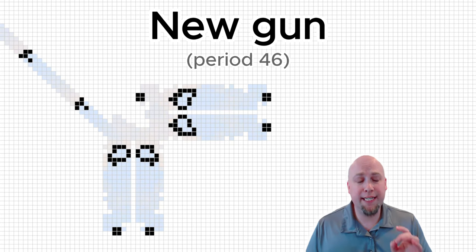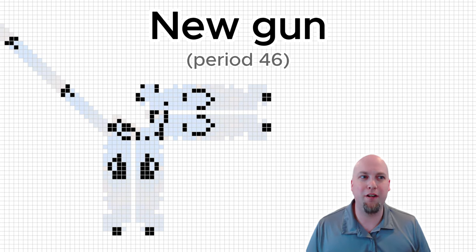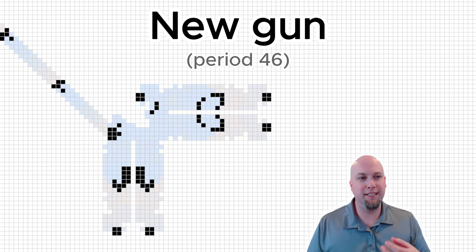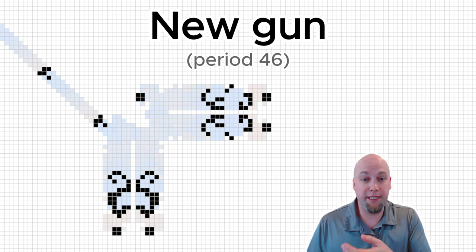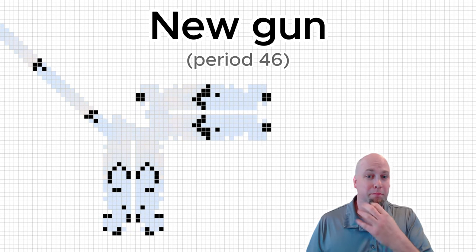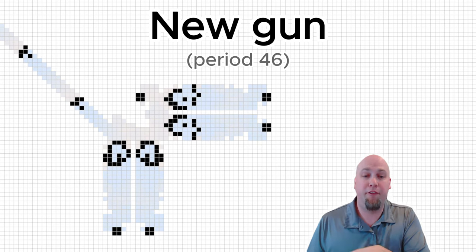And now a very natural question at this point is, what periods of glider guns are there? Can I construct a glider gun with period 31? For example, we just saw how to do it for period 30. Can we do it for period 31? What about period 32? What about period 29? Can we go down? And if so, how far down can we go?